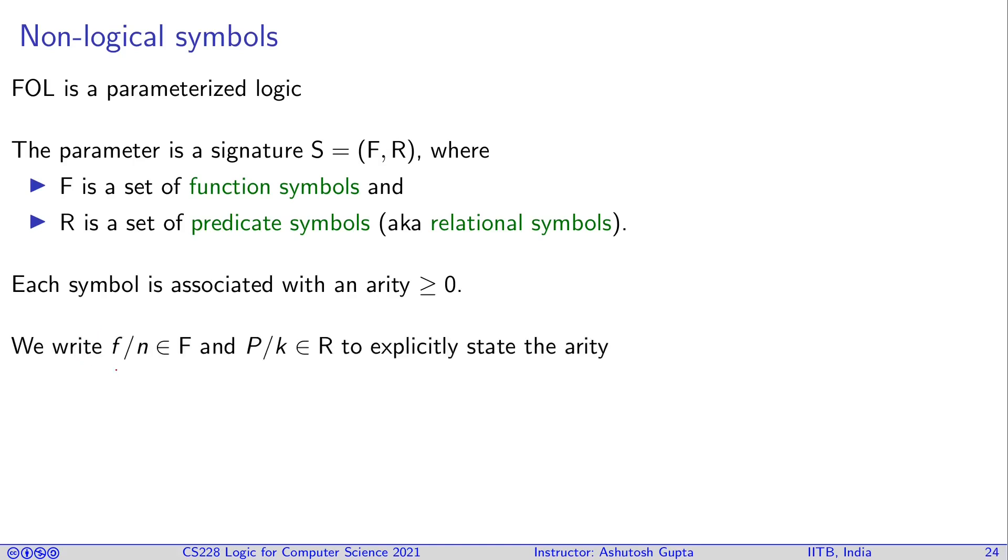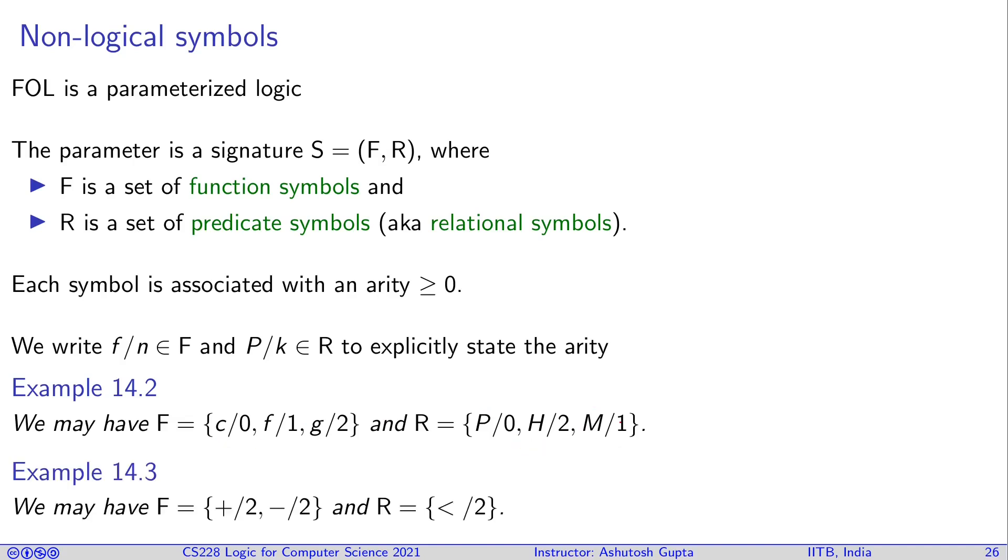For example, F can have functions c, f, g, and relation symbols can have p, h, and m with parameters 0, 2, or 1, or any number. For example, you can have functions like in linear arithmetic, plus and subtraction have the same arity, and less than is a predicate in arithmetic.